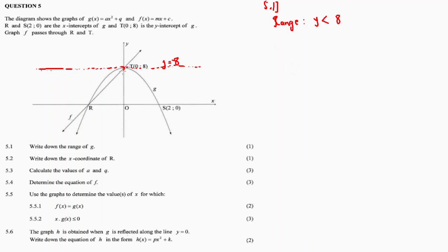5.1: The range is y is less than 8. Whenever y is less than 8, that's where we find the graph. Or this notation: y element of negative infinity to 8.